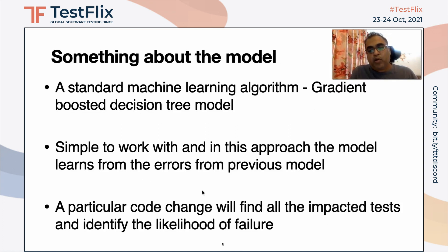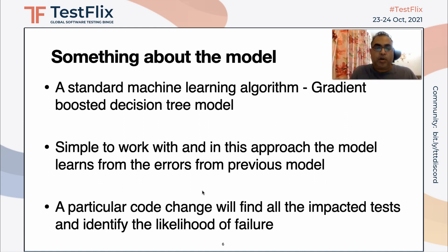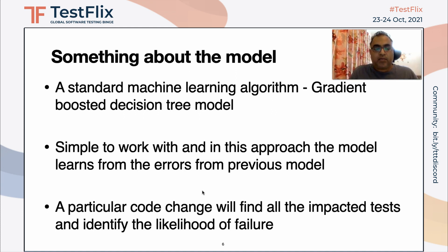I would like to talk about something about the model. We used a standard machine learning algorithm — a gradient boosted decision tree model. The decision tree is chosen because it is simpler to work with and visually simple to understand where a change would cause impact. A particular code change will find all the impacted tests and identify the likelihood of failure.